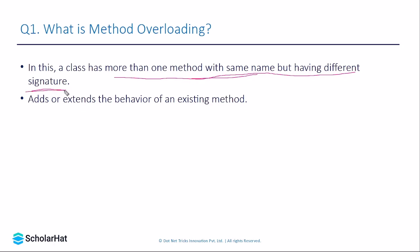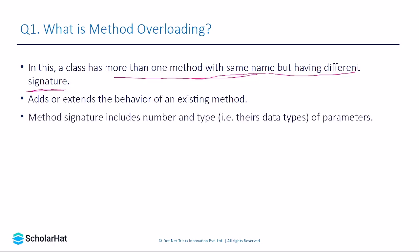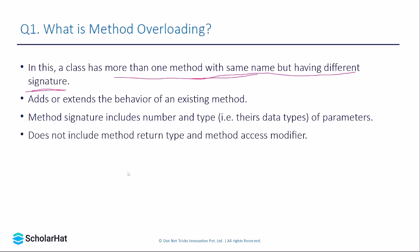This concept sounds familiar — yes, this is the concept of polymorphism, or more precisely, compile-time polymorphism, where a method has the same name but can have different parameters. A method signature includes the number and type of parameters, that is their data type, and it does not include the method return type or method access modifier.